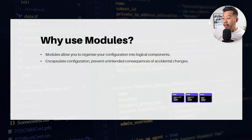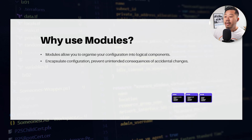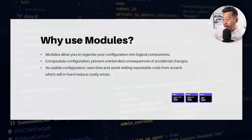You can also encapsulate configuration to prevent unintended consequences of accidental changes. With a module, you can have variable inputs and limit what those variable inputs will be, reducing any glitches that someone could create by changing an attribute that doesn't work in your environment. The biggest benefit is reusable configuration — you can save time and avoid writing repeatable code from scratch, which reduces costly errors.